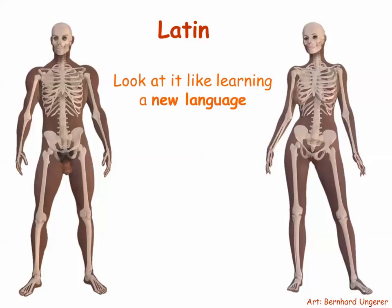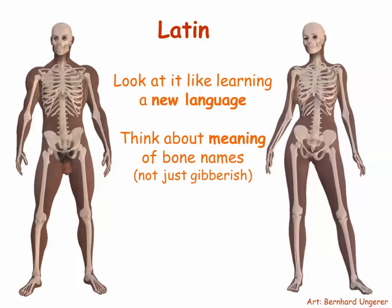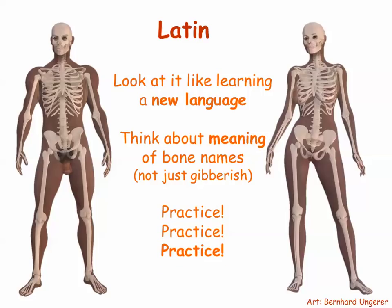So one shortcut to learning bone names quickly is to consciously recognize that you're learning a new language. By doing that, you will then think about the meaning of each bone's name instead of just thinking of it as a silly-sounding word from a book by Dr. Seuss. And as you start to recognize the meanings of all the bone names, it's going to help you recall them quickly and easily. But it also means that to master your new language, you have to commit to regular short practice sessions with flash cards or other memory drills.